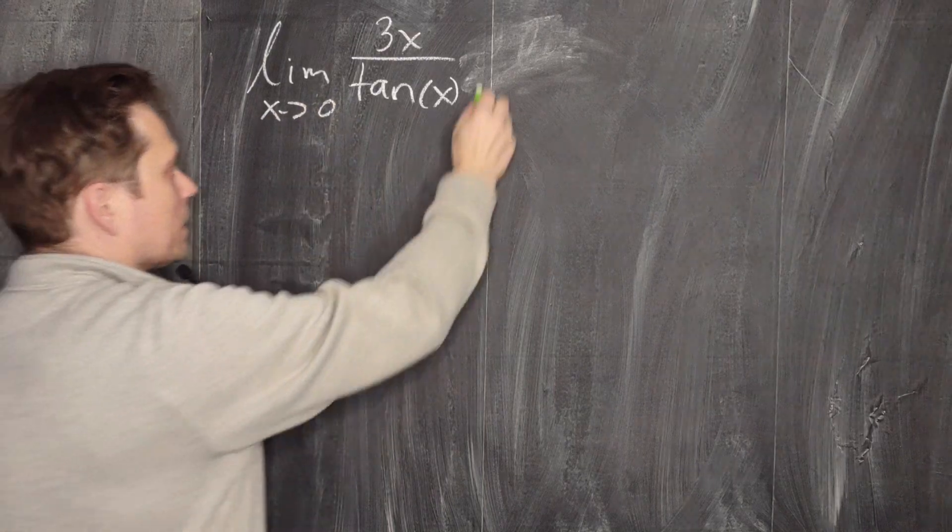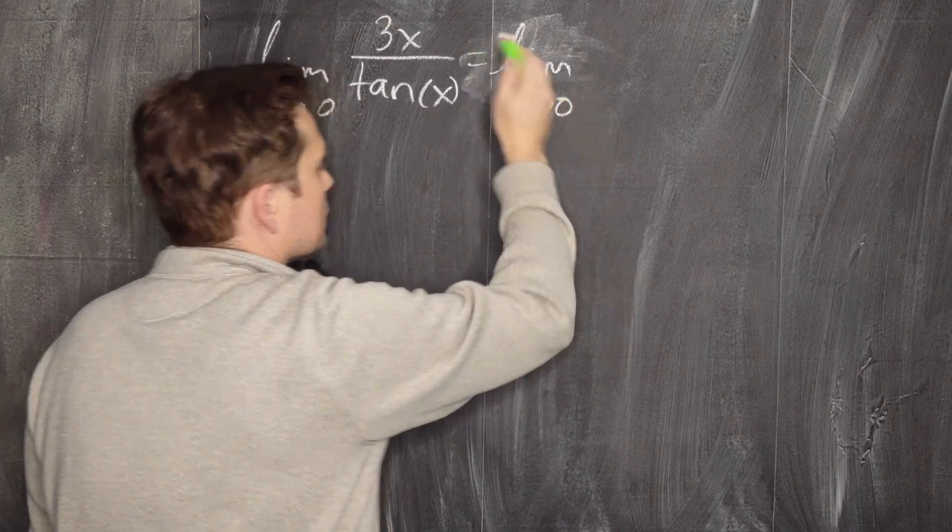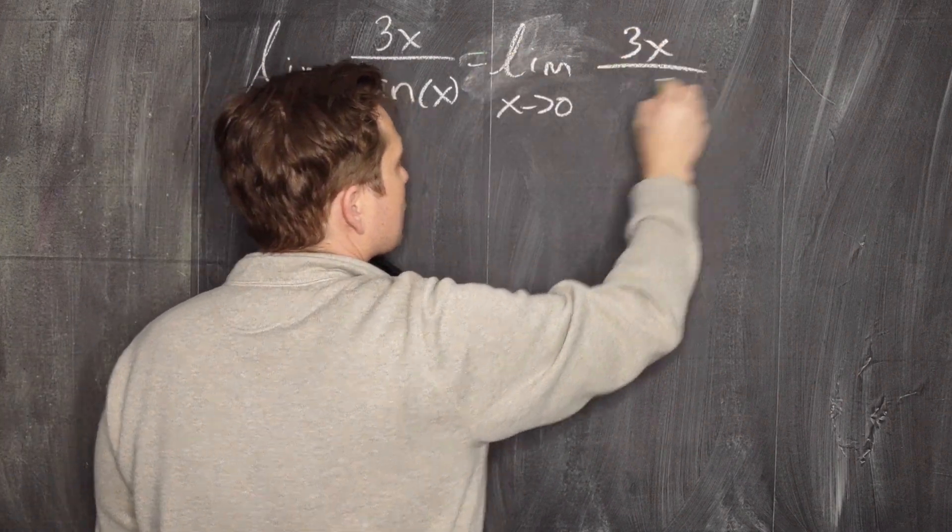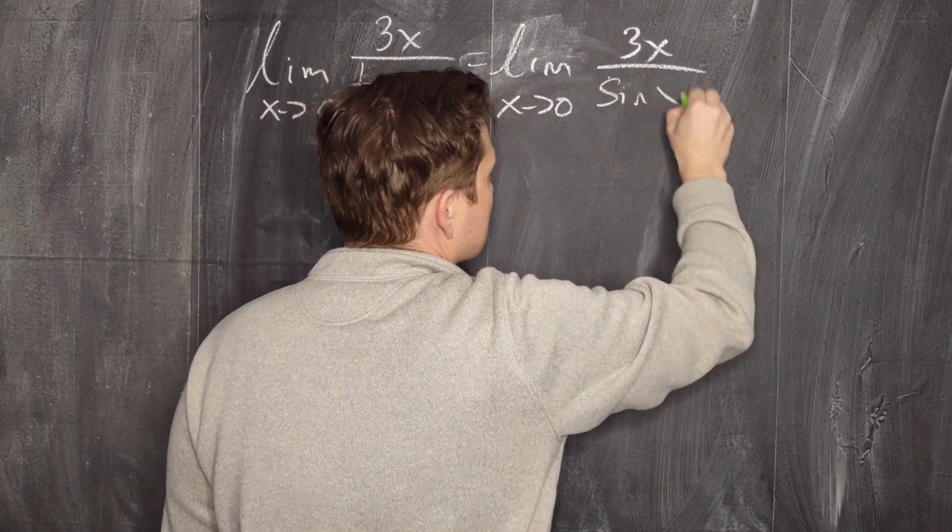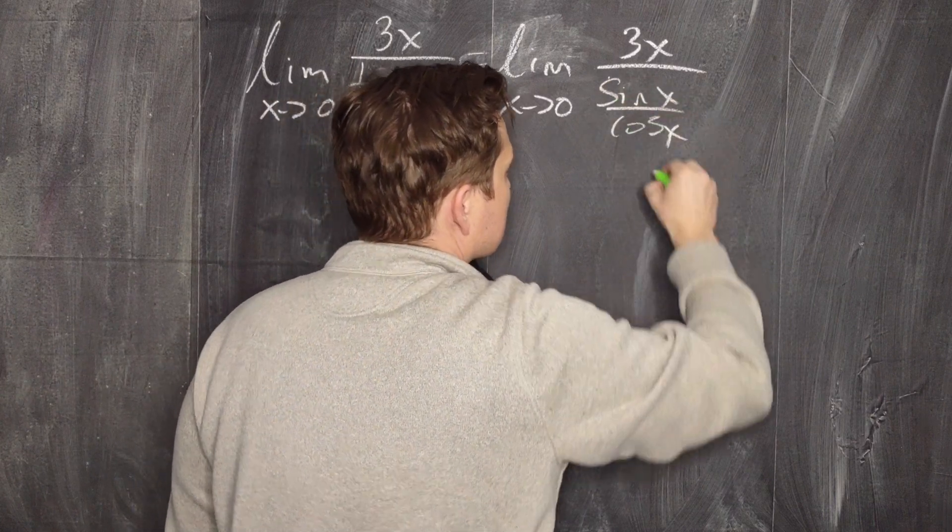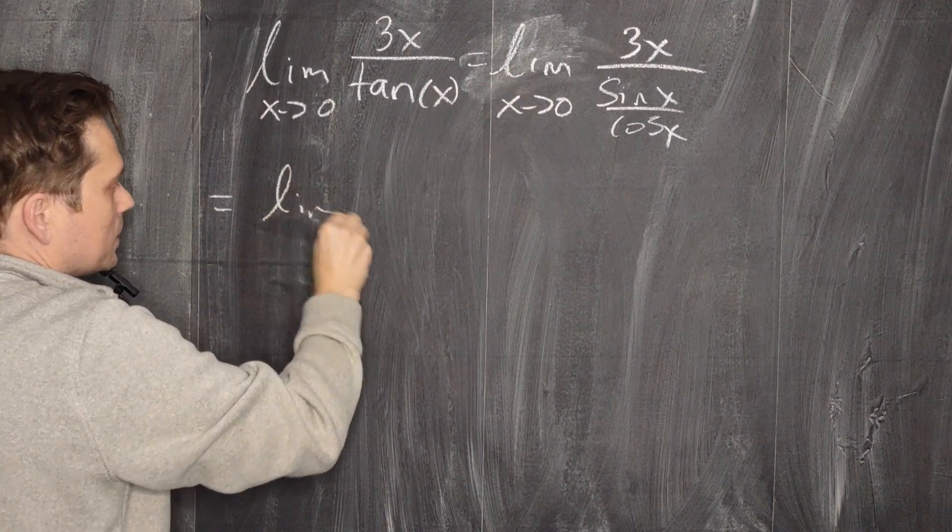Limit as x approaches 0 of 3x over tangent of x. First stage in the process is to write this as the limit as x approaches 0, and then just rewrite this as 3x, and we write the tangent in the bottom there as sine of x over cosine x.